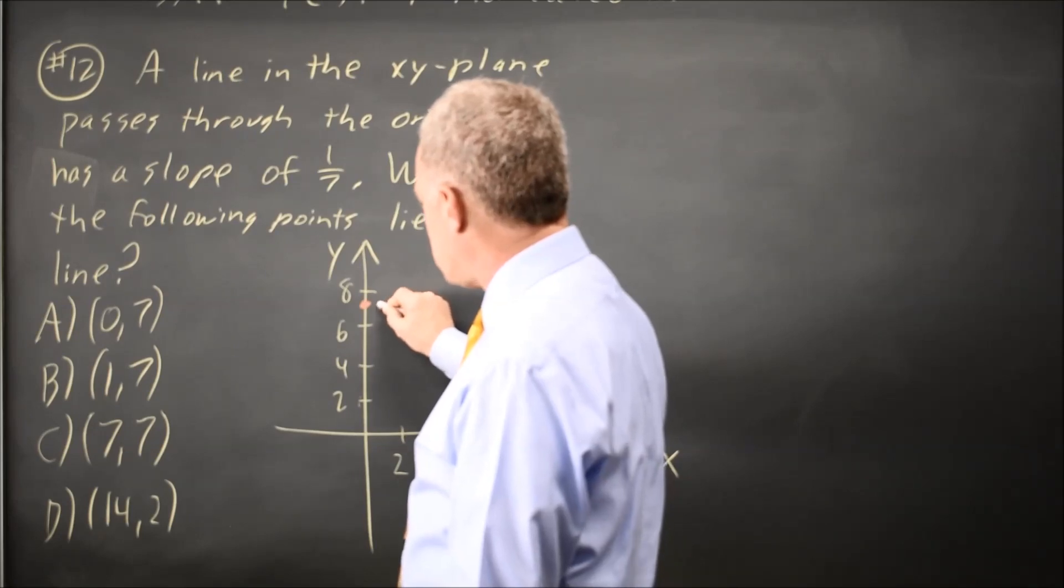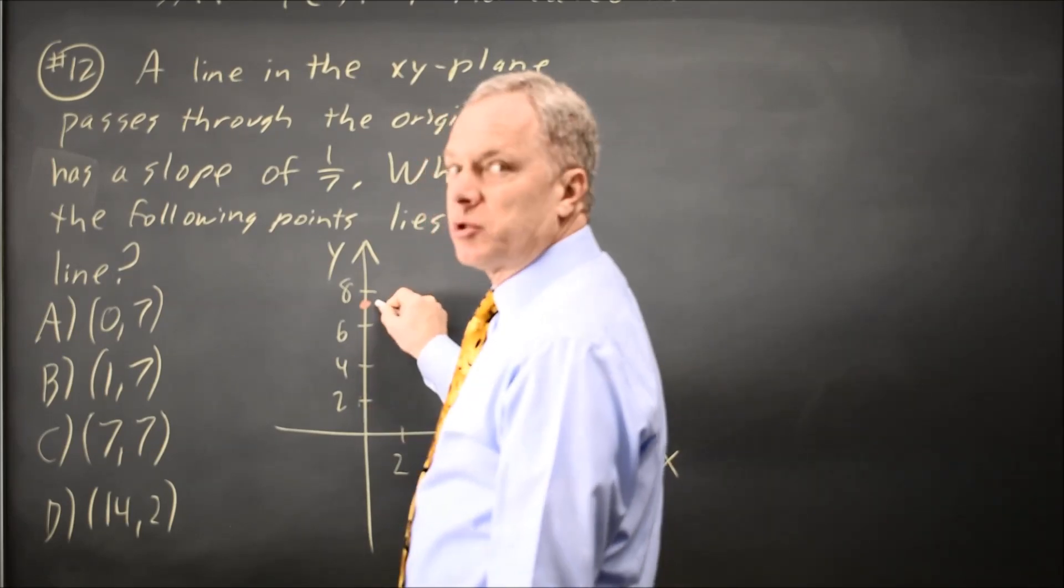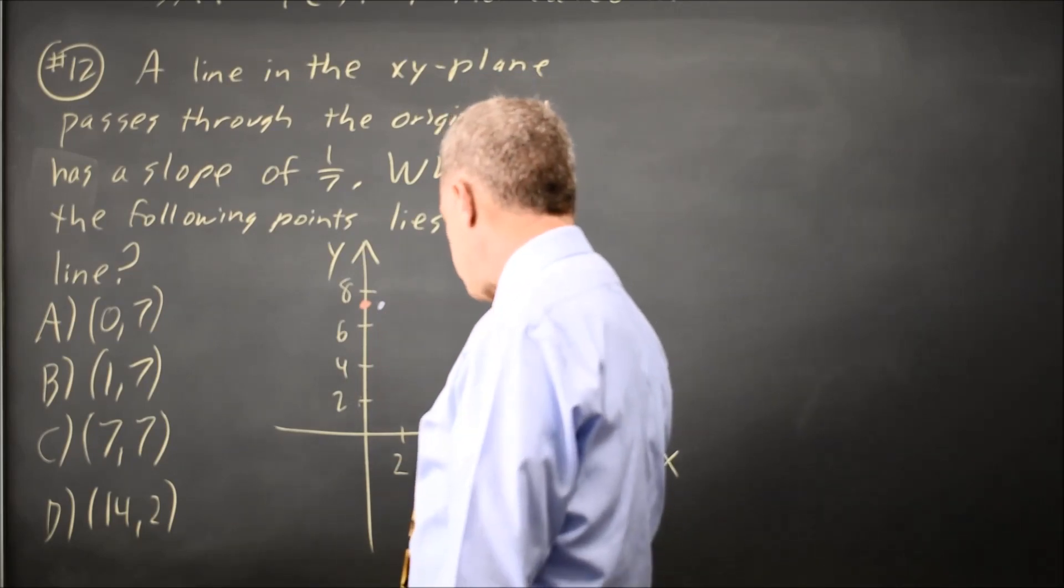1, 7 would be this point. The line through the origin and this point has a very steep positive slope, so that can't be right.